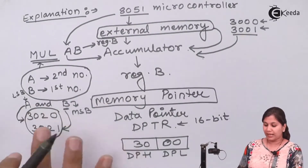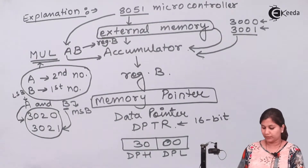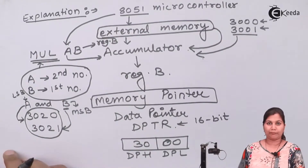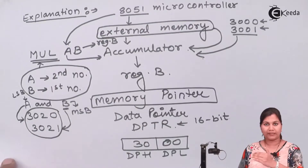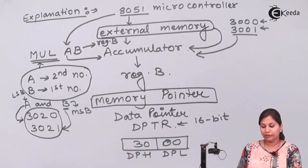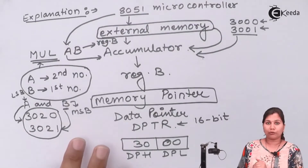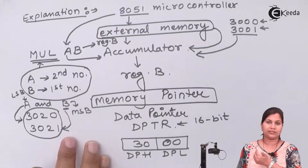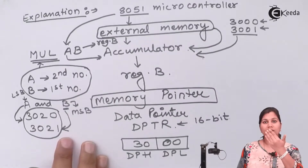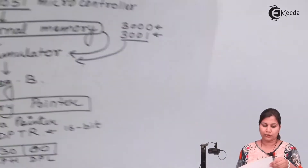Before writing the program, we need to provide a sequence of steps. We will draw a flowchart to get the direction of flow of instructions and understand how the steps are going to be executed.